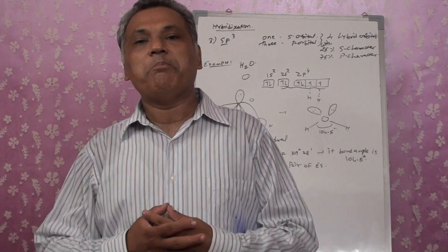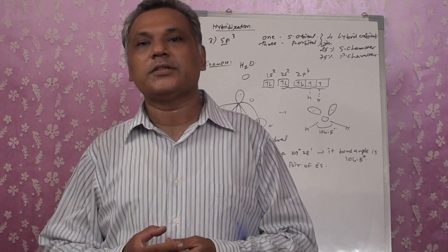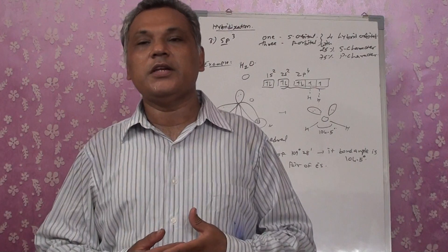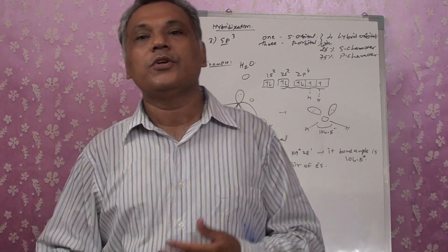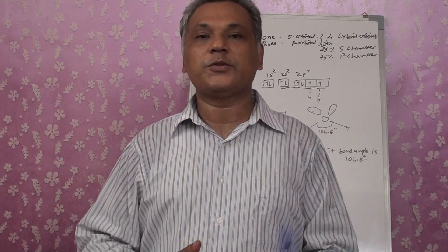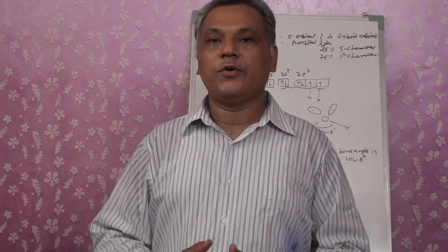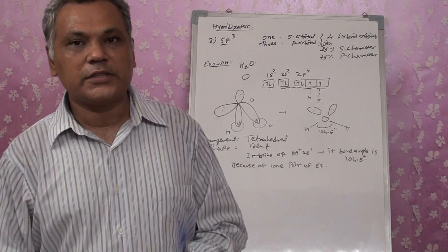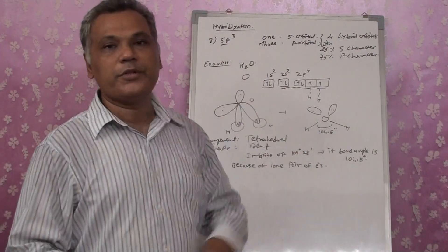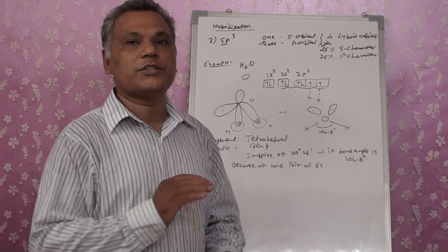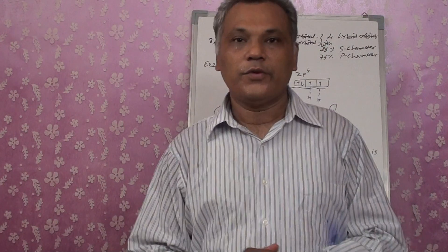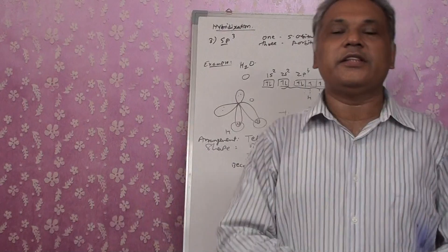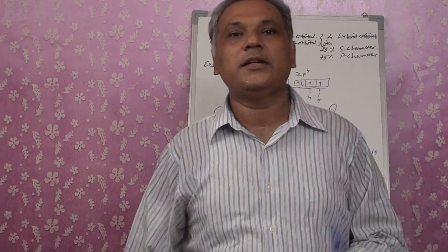These were examples with lone pair electrons for sp2 and sp3 hybridization. We also have many other types of hybridization such as sp3d, sp3d2, dsp2, and dsp3. We will discuss those in our next lecture. For today, let's first understand these three types, and then we will cover the rest of the hybridizations. Thank you.